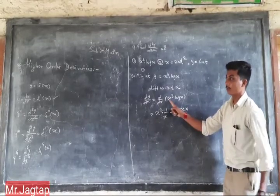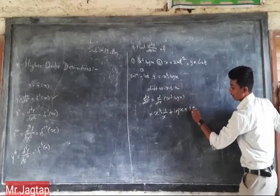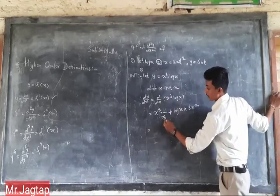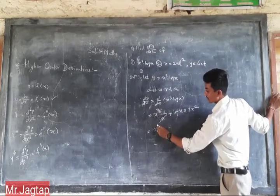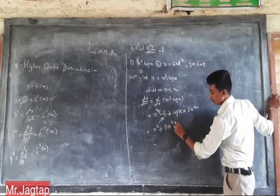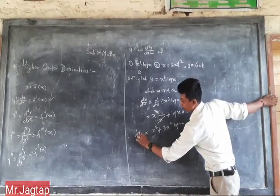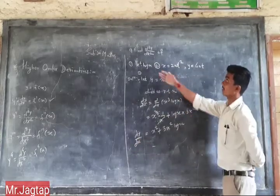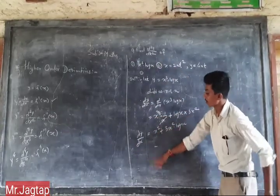Derivative of log x is 1/x, plus second function log x taken constant times derivative of x-cubed is 3x-squared. So dy/dx equals x-squared plus 3x-squared log x. This is our first derivative result.